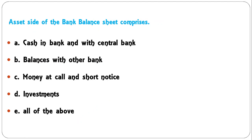The asset side of the bank balance sheet comprises: cash in bank with the central bank, balances with other banks, money at call and short notice, investments, or all of the above? The asset side of a bank's balance sheet comprises all of these, so E — all of the above — is the correct answer.